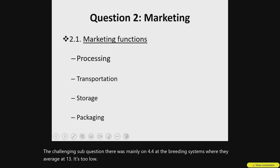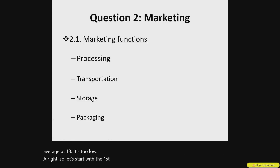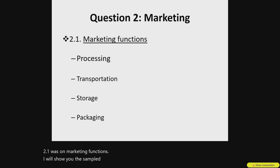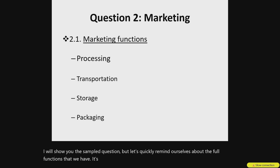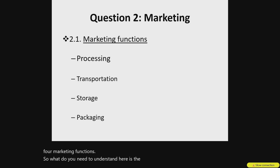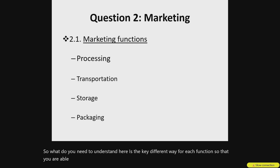Let's start with the first one in Agrik Marketing, Question 2. Your 2.1 was on marketing functions. I will show you the sampled question, but let's quickly remind ourselves about the four functions that we have: processing, transportation, storage, and packaging. What you need to understand here is the key defining word for each function, so that you are able to understand the question when you go to the exam.